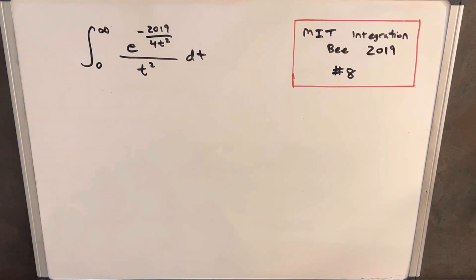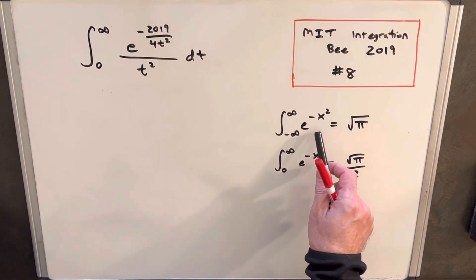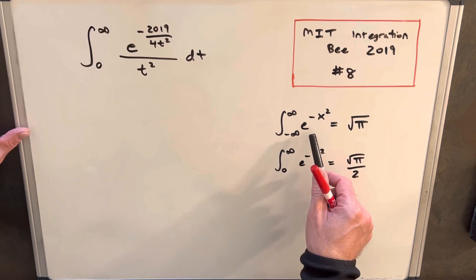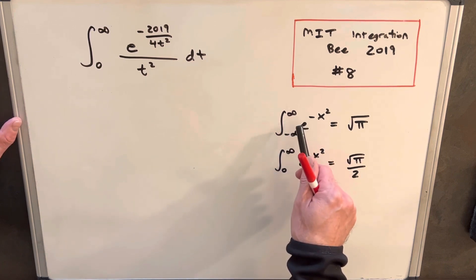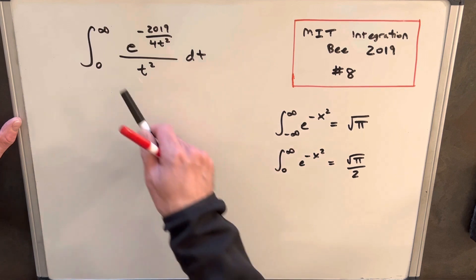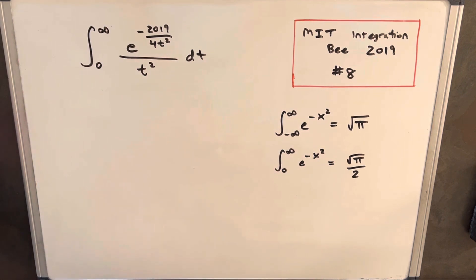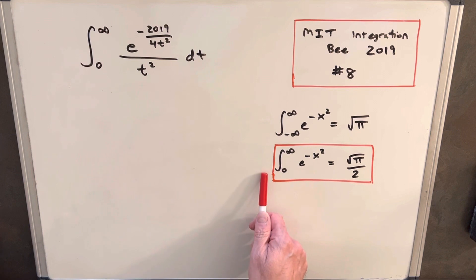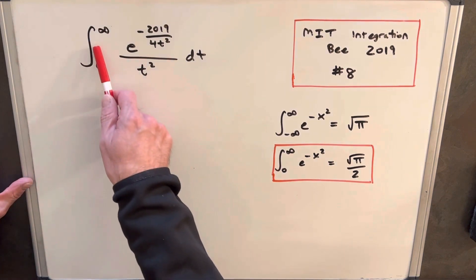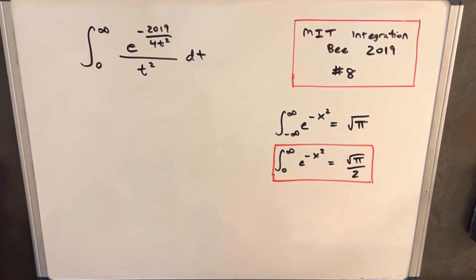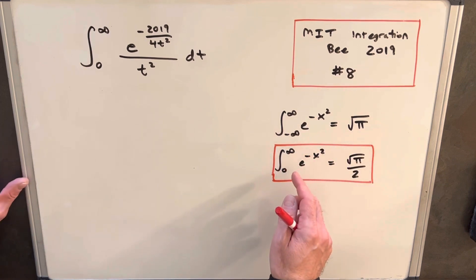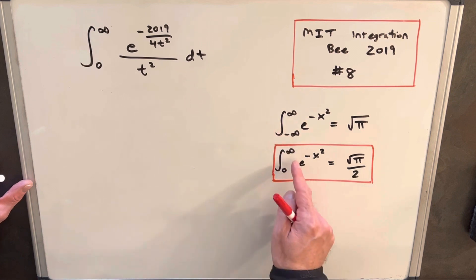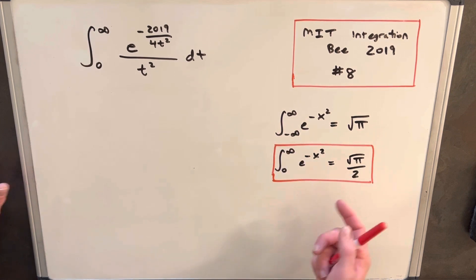The first thing we're going to want to notice is the similarity to the Gaussian integral. So we have these two formulas. This looks pretty similar to what we have in the numerator here. The big difference is this first formula is going from negative infinity to infinity, whereas our integral is going from zero to infinity. This second formula is going to be more useful because it matches our limits of integration, and it's just half of the first one because this is an even function.